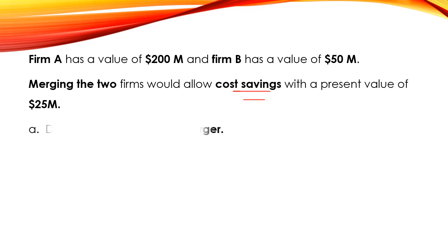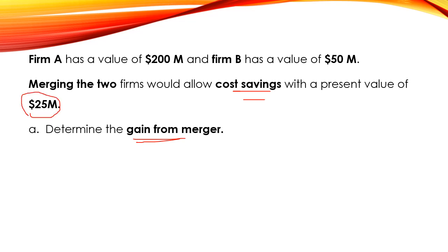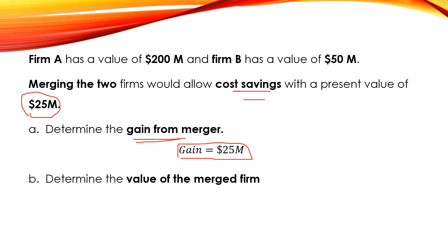We need to determine first the gain from the merger. Since we have a cost saving of 25 million dollars, this would be the gain from the merger. As a result, the gain will be 25 million dollars.